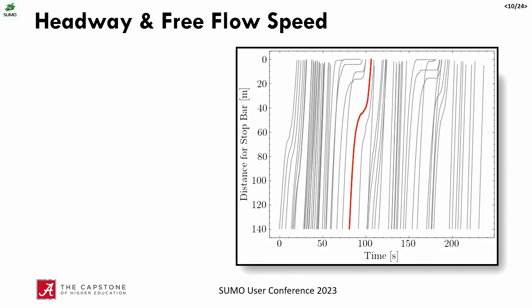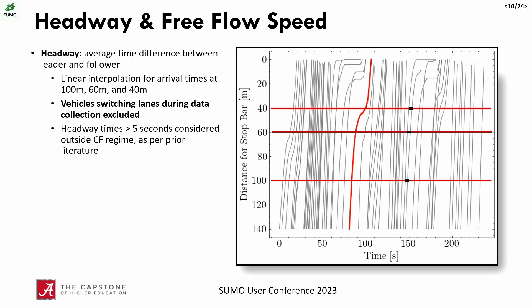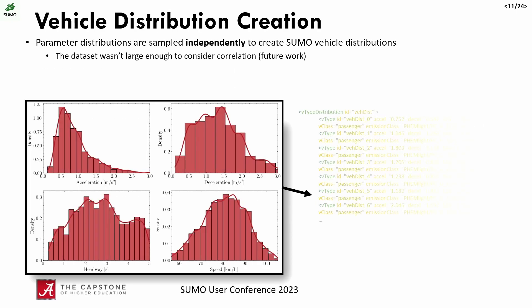To calculate headway and free-flow speed, we also use the space-time diagram, using linear interpolation to find when trajectories cross 160 and 40 meters from the stop bar. Calculating the difference between leader-follower pairs gives us the headway. Headways outside of five seconds are considered outside of the car-following regime and excluded. For free-flow speed, we use this headway calculation to find vehicles outside the car-following regime — only considering vehicles in free flow — and take the average of their piecewise linear fit segments that have no acceleration, filtering out vehicles with acceleration or deceleration greater than 1 m/s².